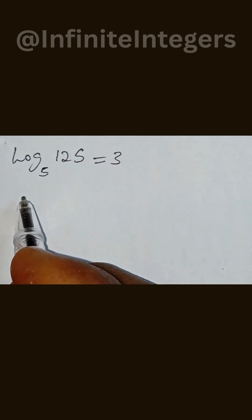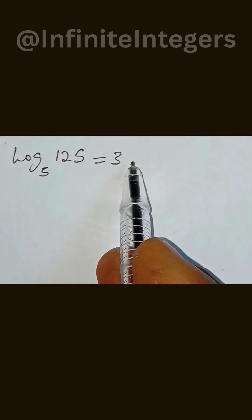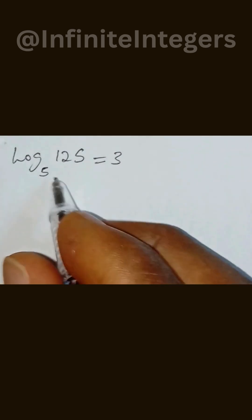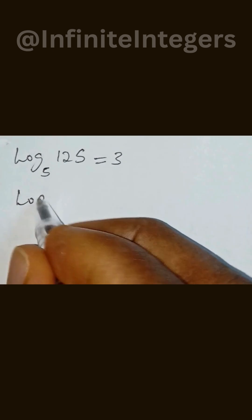Let's do this together. So log base 5 of 125 equals 3. What we need to do is use change of base, so we can write this as log 125 over log 5 equals 3.